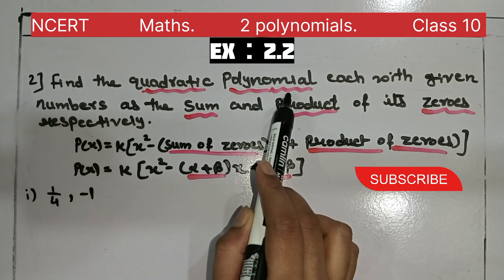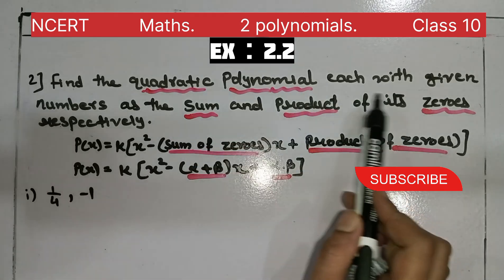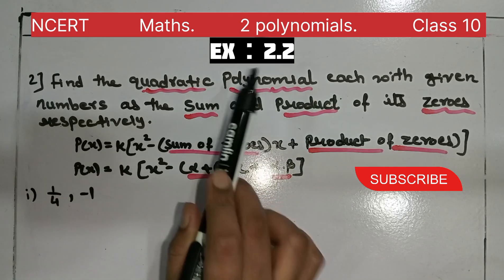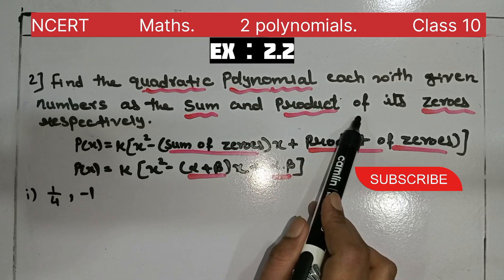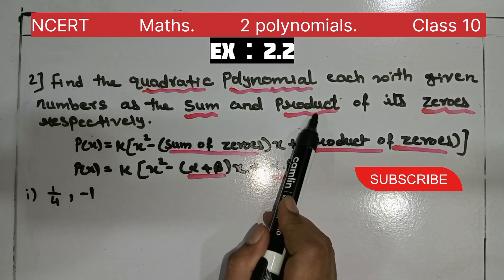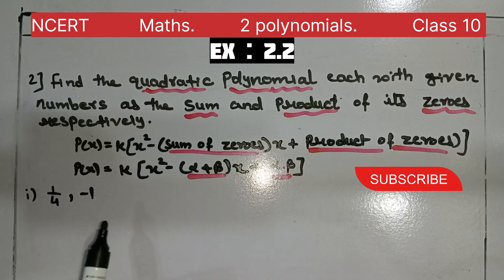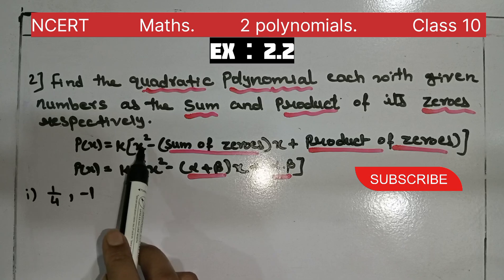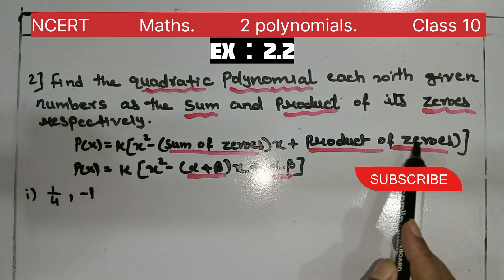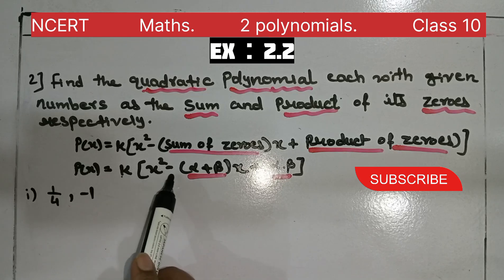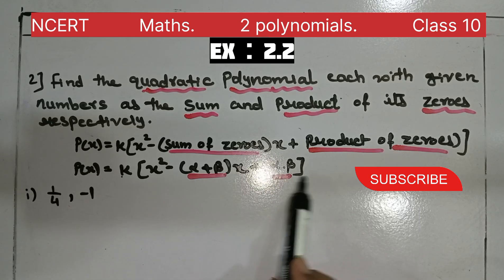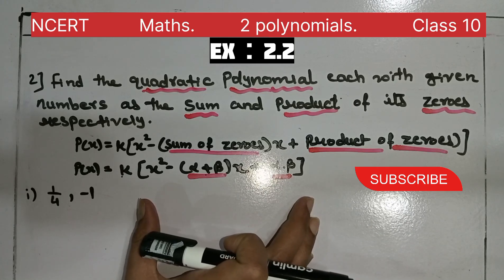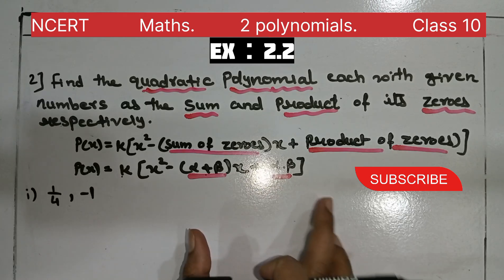Find the quadratic polynomials — we have to find quadratic polynomials, each with given numbers as the sum and product of its zeros respectively. The formula for quadratic polynomials is: K bracket x² minus (sum of zeros)x plus (product of zeros), i.e., K[x² minus (α+β)x plus α·β], where α+β is the sum of zeros and α·β is the product of zeros.